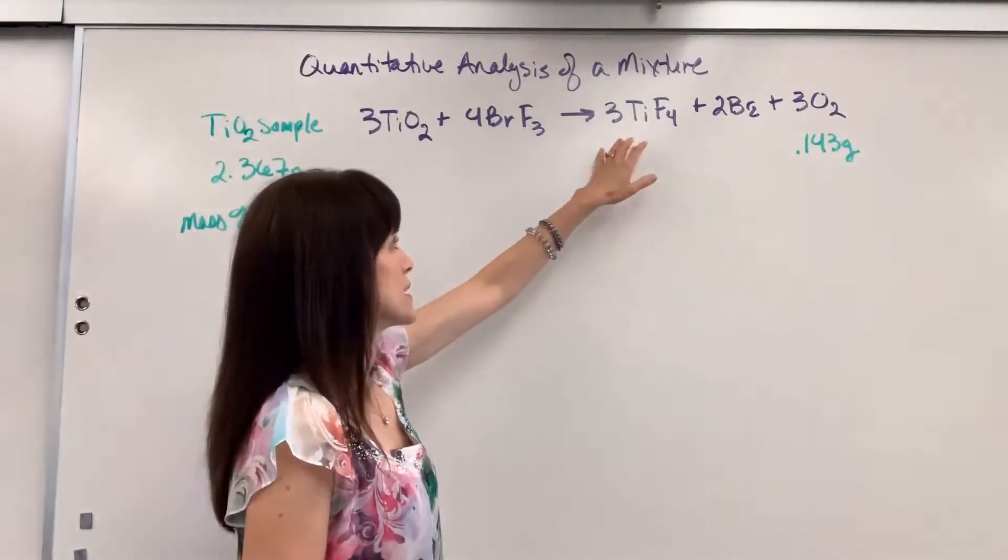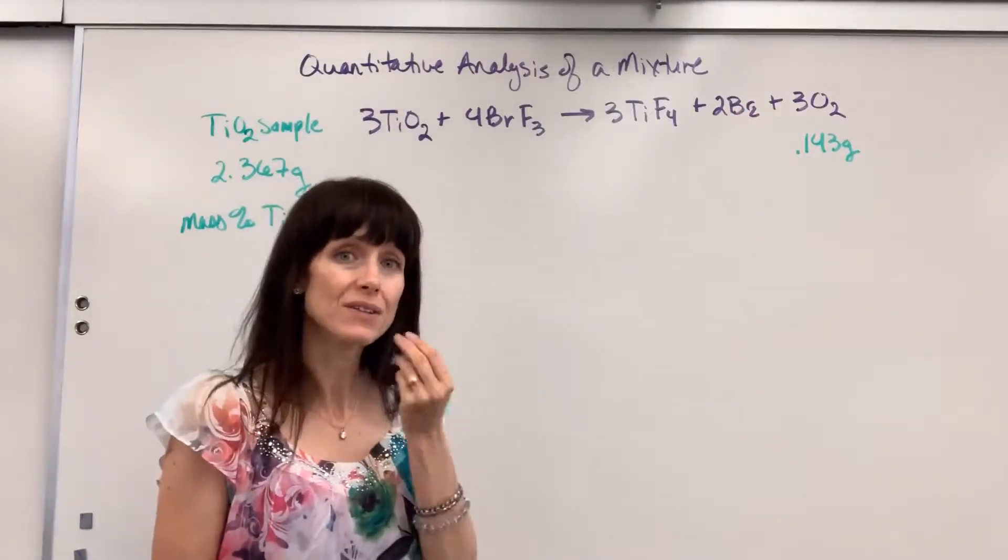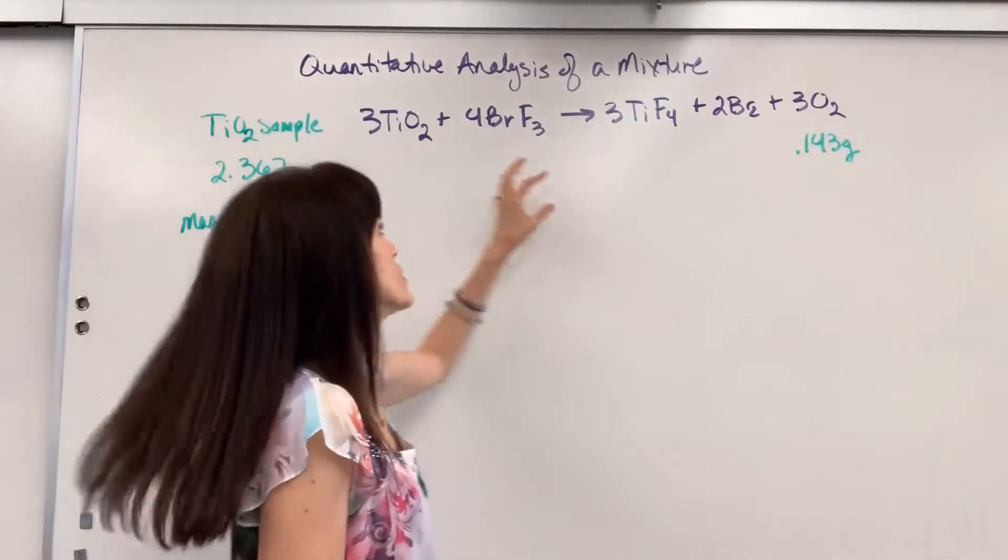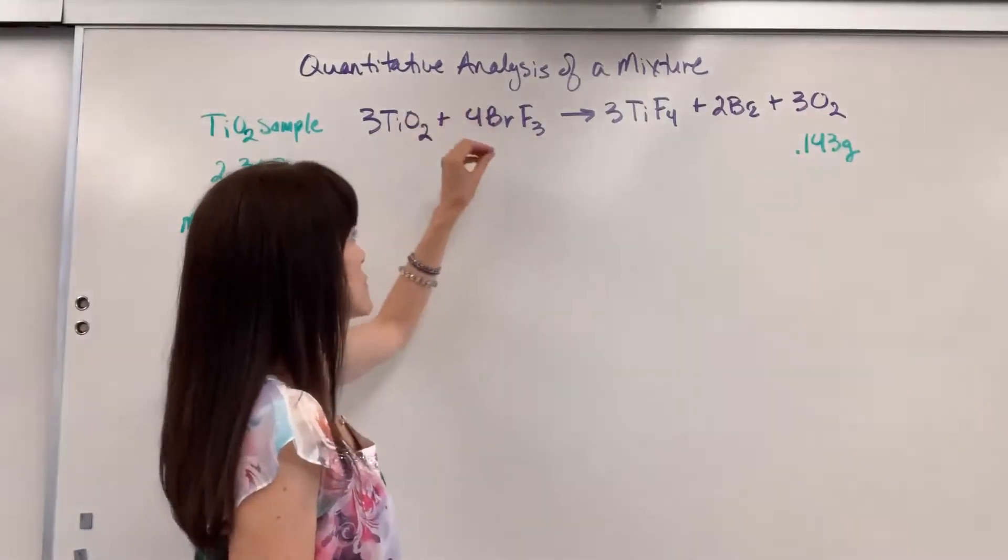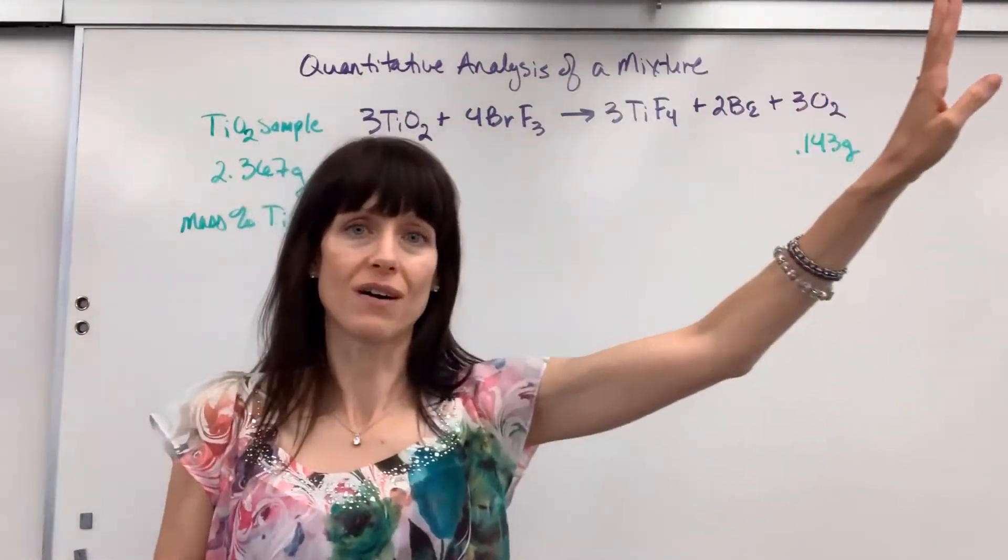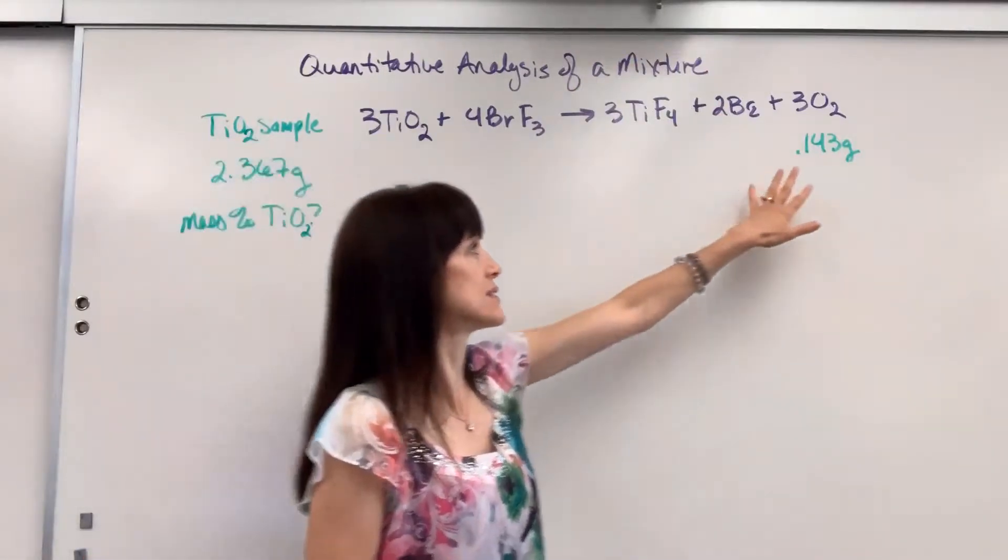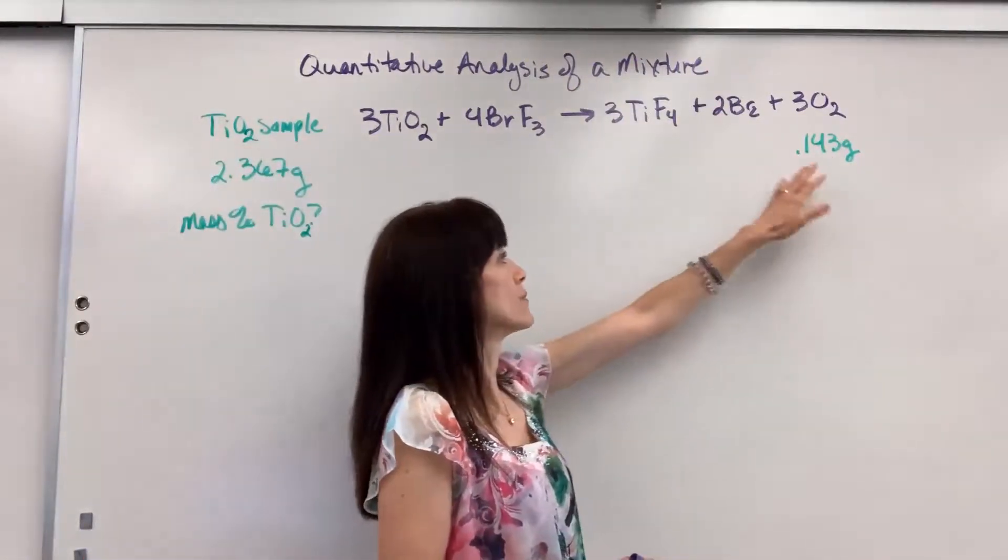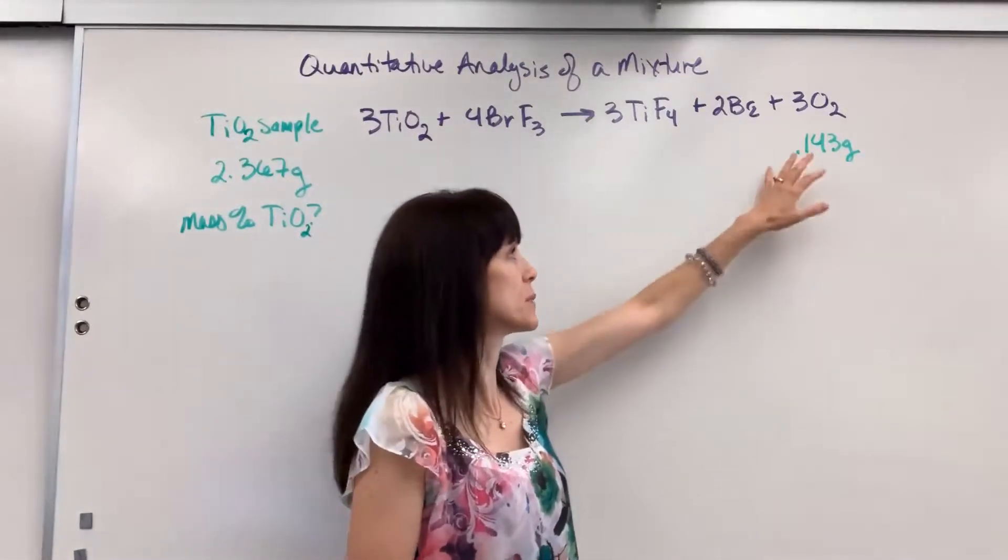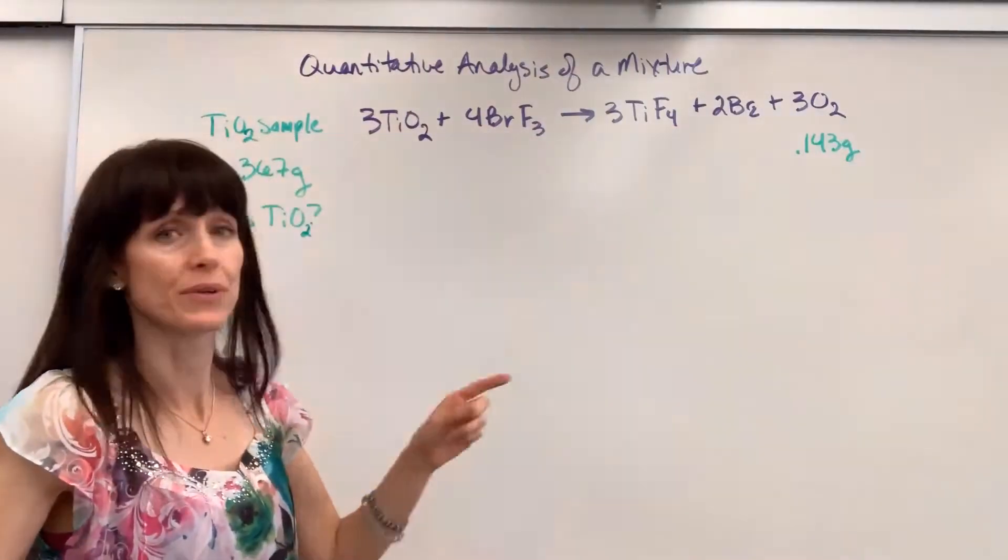It's going to produce the titanium four fluoride, bromine, which is a liquid, and then here's the quantitative part of it, oxygen. That's gas. So we know the mass that we begin with and the mass that we end with, that gas is going to evolve, is going to leave the container. And that difference tells us from what we began with, what we end with, it tells us the mass of the oxygen. So they do this experiment and they tell us that the oxygen is 0.143 grams.